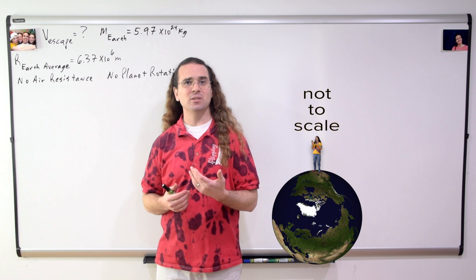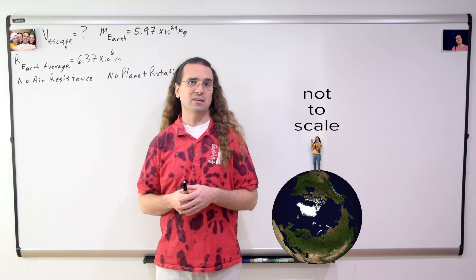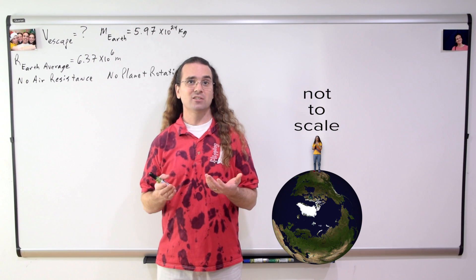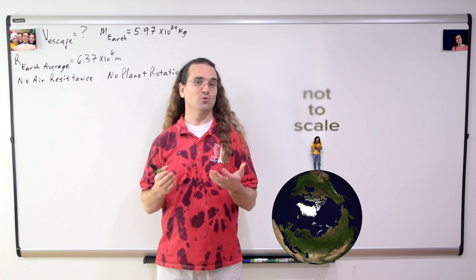In other words, in the absence of air resistance, the escape velocity is the minimum velocity at which we would need to launch Bo upward such that he would never return to the planet.